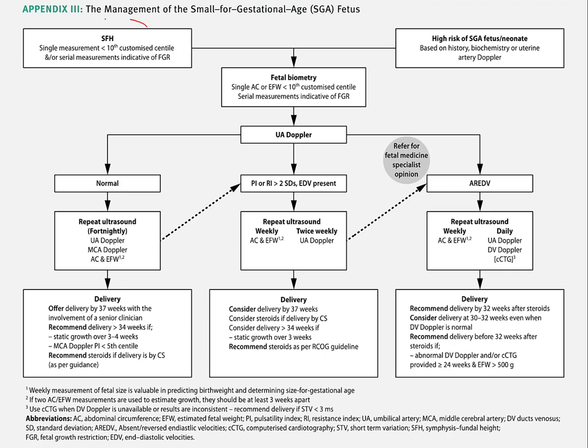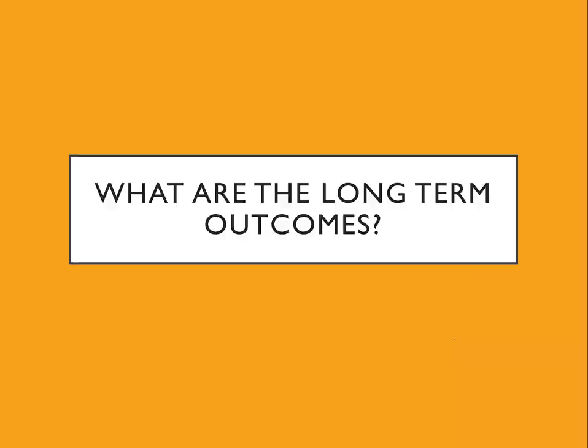To summarize management: screen with symphysiofundal height chart, history, biochemistry, and uterine artery Dopplers. If abnormal, do umbilical artery Dopplers. If normal, repeat with middle cerebral artery Doppler and fetal biometry every two weeks. If Dopplers remain normal, continue until delivery up to 37 weeks. If absent or reversed end-diastolic flow is found, proceed to ductus venosus, middle cerebral artery, and computerized CTG assessment. Generally deliver by 32 weeks, or even between 30–32 weeks if ductus venosus becomes abnormal or computerized CTG is abnormal.